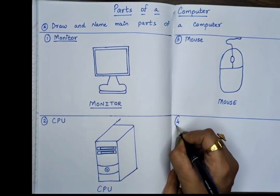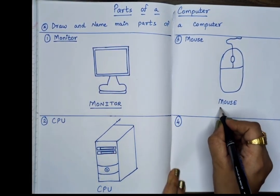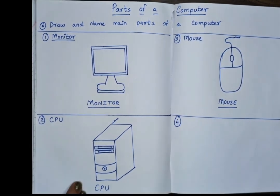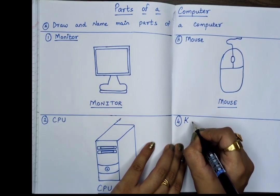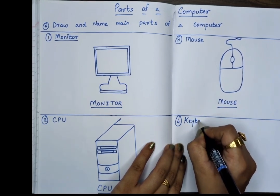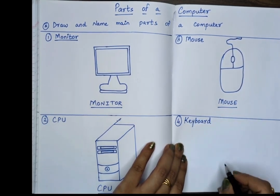Next is keyboard. Keyboard. So K-E-Y, B-O, A-R-D, board, keyboard.